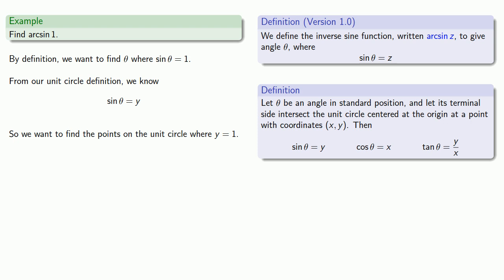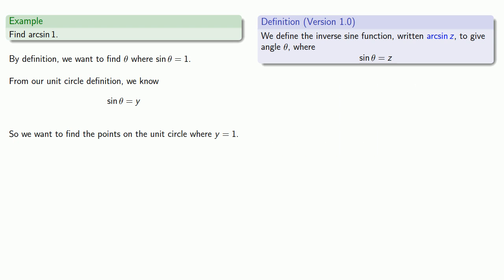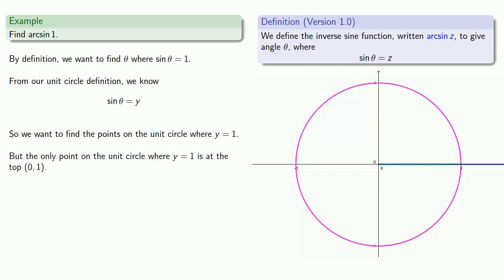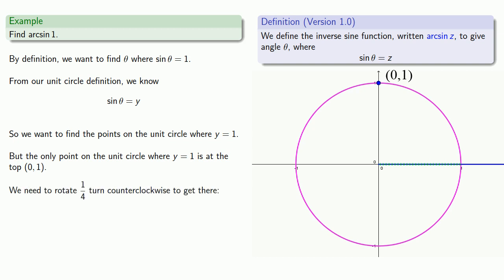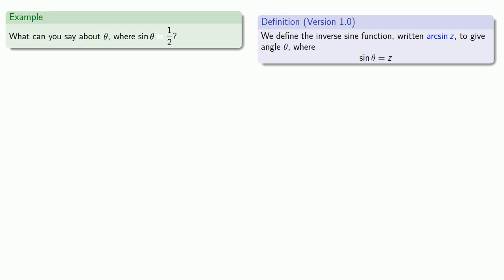Let's do this the easy way and draw a picture. We want to draw our unit circle and find the points where y is equal to 1. But the only point on the unit circle where y is equal to 1 is at the top, (0, 1). And remember, the arc sine of z gives us an angle theta, so we have to figure out the angle that this top point corresponds to. We need to rotate a quarter turn counterclockwise to get there, and so this corresponds to an angle of 90 degrees. A politician or demagogue would be happy and say, 'We've solved the problem!' But what tends to make mathematicians unpopular at cocktail parties is they ask things like, 'Well, what happens if?'